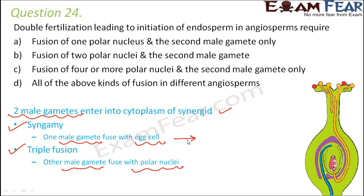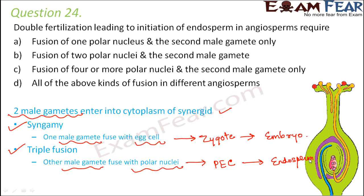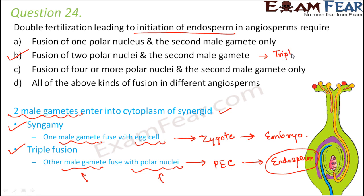The result of syngamy: the male gamete fuses with the egg cell to give a zygote — the single-celled zygote which later develops to form the embryo. The result of triple fusion: the male gamete fuses with the polar nuclei to form the primary endosperm cell, which later develops to form the endosperm. For endosperm to be initiated, fusion must happen between a male gamete and the polar nuclei. Option B is the right answer — fusion between polar nuclei and the second male gamete, known as triple fusion.